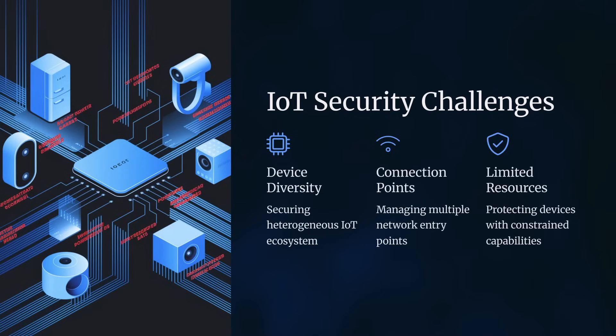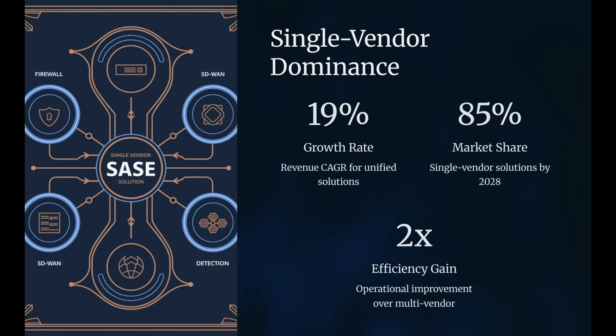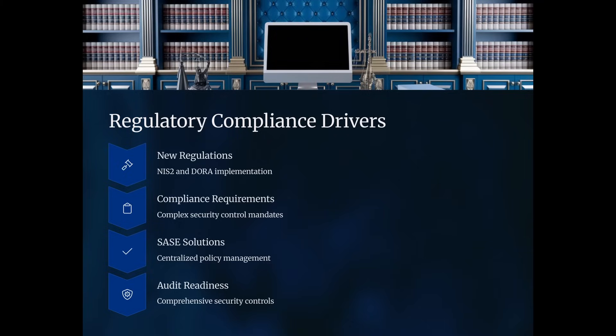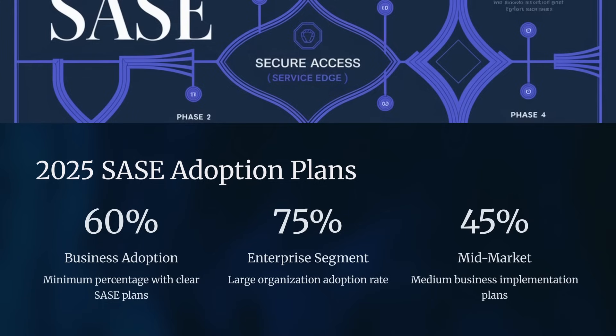One notable trend is the divergence in growth between Security Service Edge, or SSE, and Software-Defined Wide Area Network, or SD-WAN, components of SASE. SSE is projected to outpace SD-WAN revenue nearly 2 to 1, with SSE maintaining a robust double-digit compound annual growth rate over the next five years. This shift highlights enterprises' prioritization of integrated security solutions as they become increasingly cloud and mobile-first.